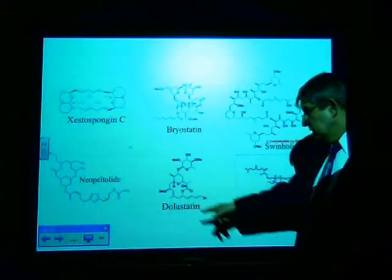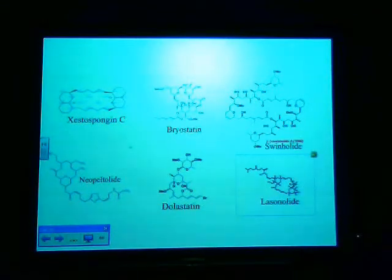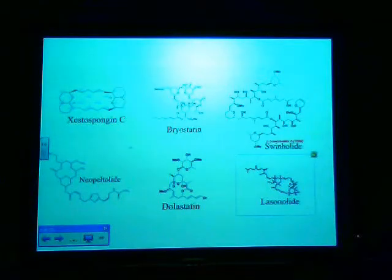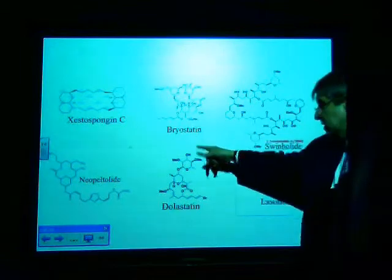Now, the one that's shown down here, dolistatin, has a different source. This comes from the sea hare. This compound right here comes from the sea hare. And that's actually being looked at also as an anti-cancer compound. And that particular one, I believe, is in phase two right now. So that is still undergoing current investigation.